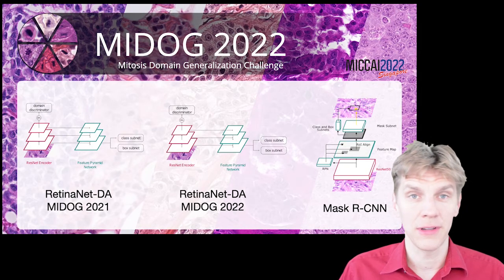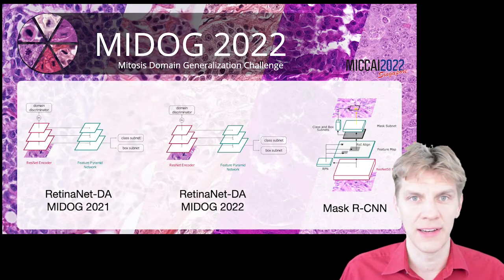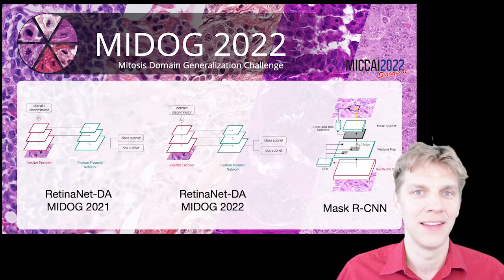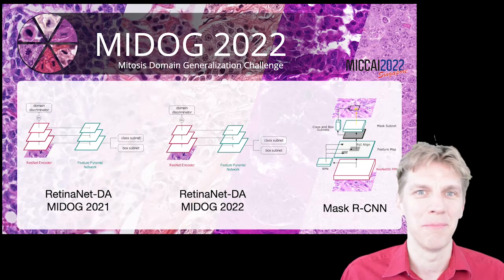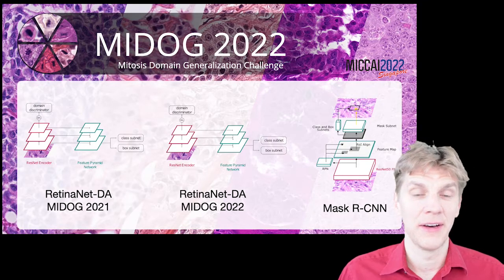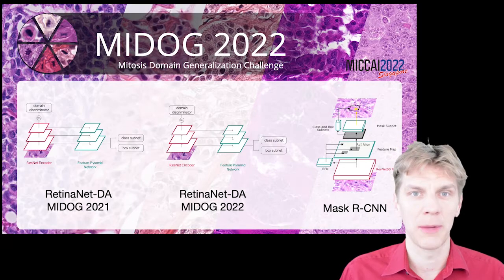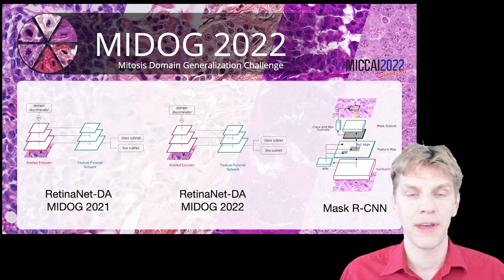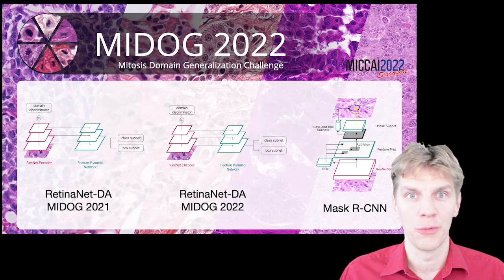First of all we have the RetinaNet domain adversarial approach as we did in the MyDoc 2021. This one comes in two versions which I will be talking about soon, and then we have a MASK RCNN based approach which I will be talking about next.